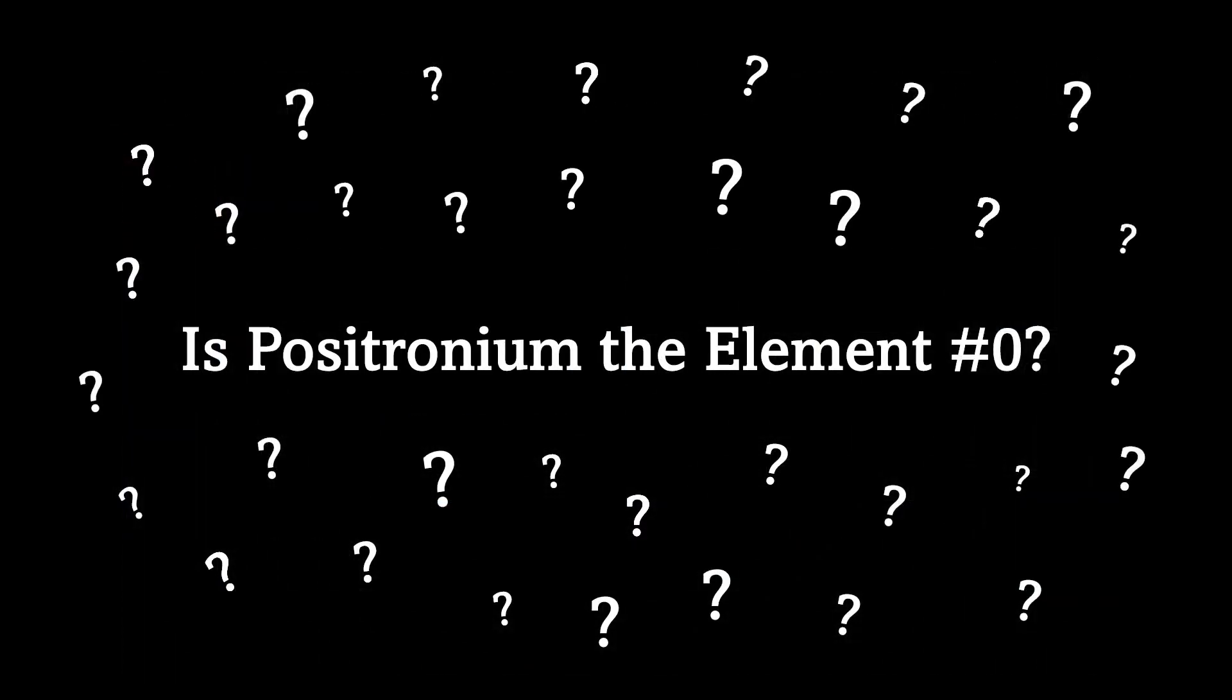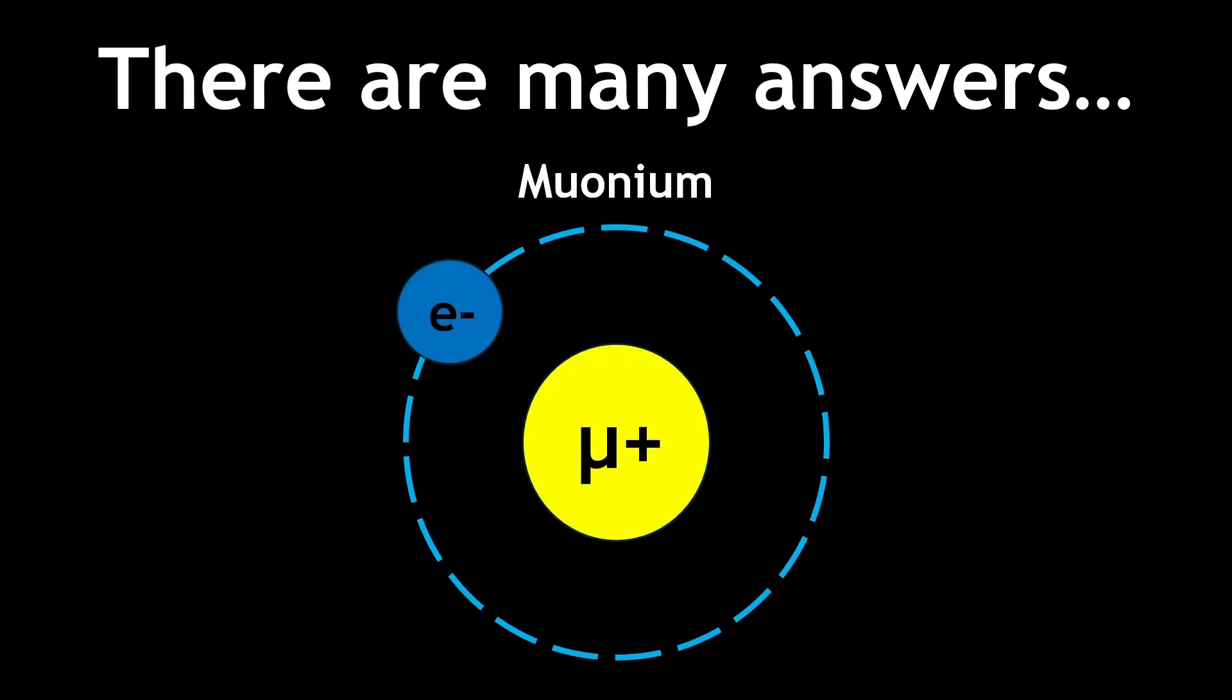But is positronium the real element zero? The answer is subjective. Many scientists consider muonium, which consists of an electron orbiting an antimuon, as being element zero because of its similar structure to hydrogen, with the only difference being that the proton is substituted with an antimuon.